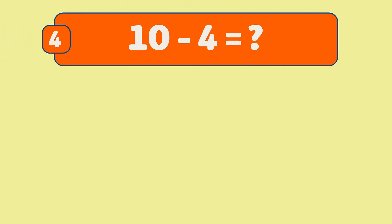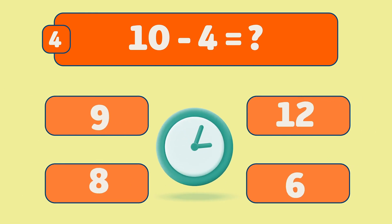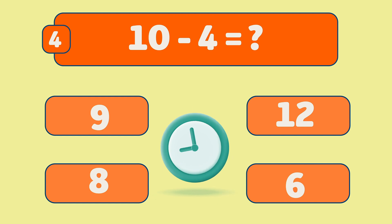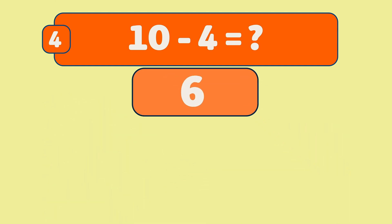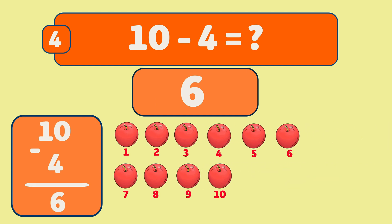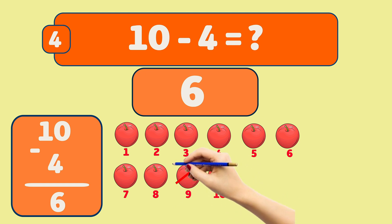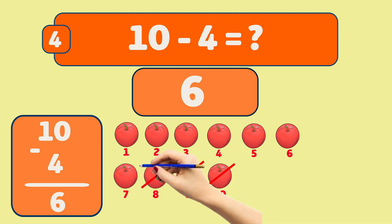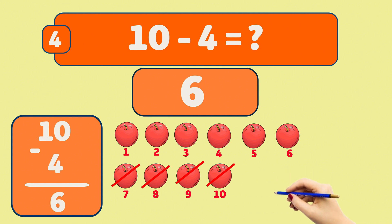What is 10 minus 4? The answer is 6. Let's count, starting at 10: 10, 9, 8, 7. Now only 6 apples remain.